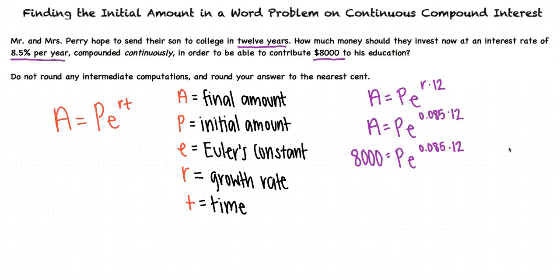They want to know how much money they should invest now, which makes sense that we are left with P, and we want to find the initial amount. From here, we can divide both sides by E raised to the 0.085 times 12, and find that P equals 8,000 divided by E raised to the 0.085 times 12.